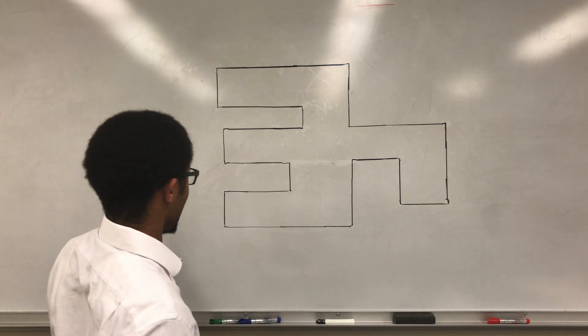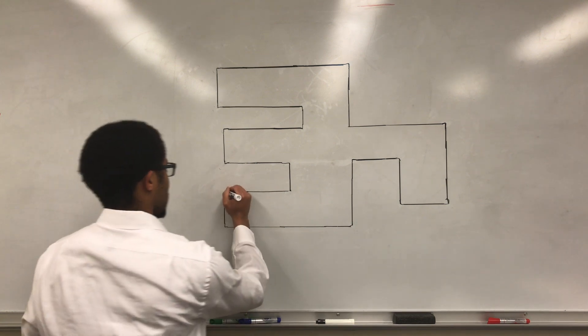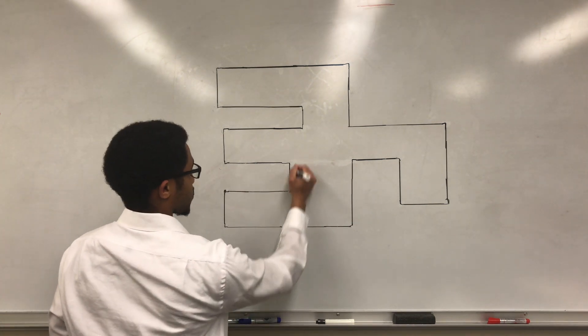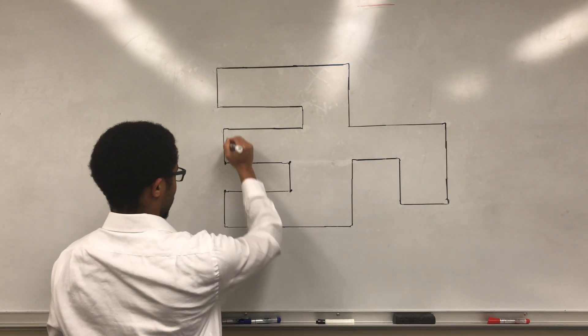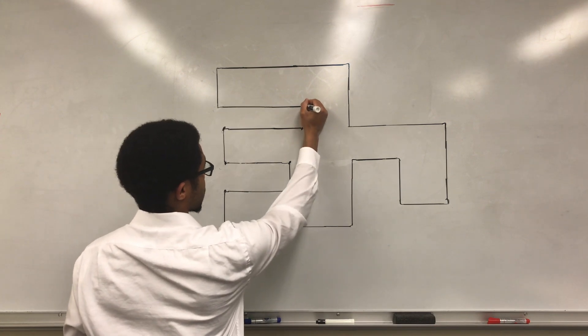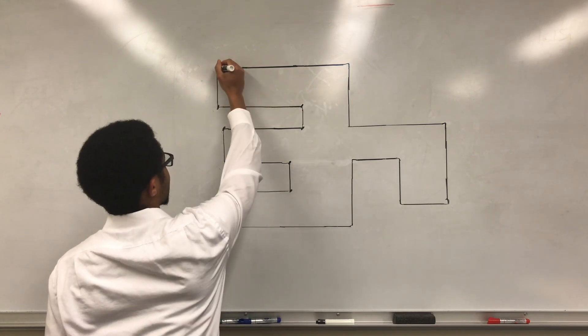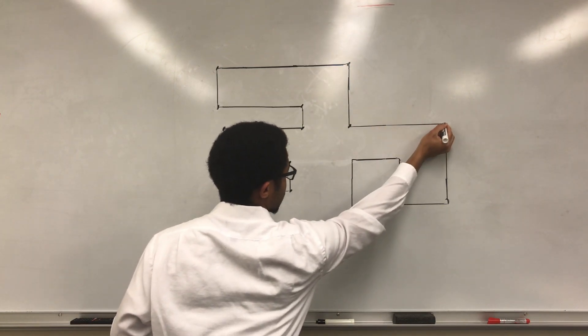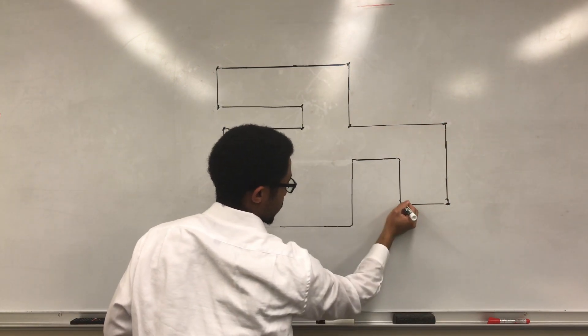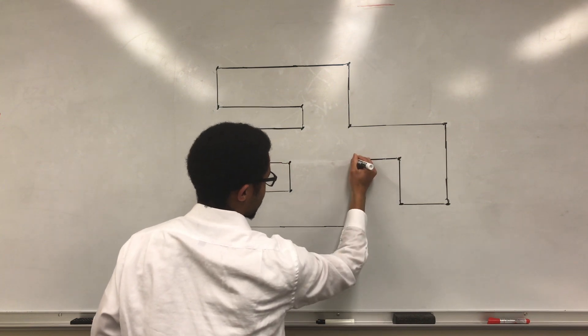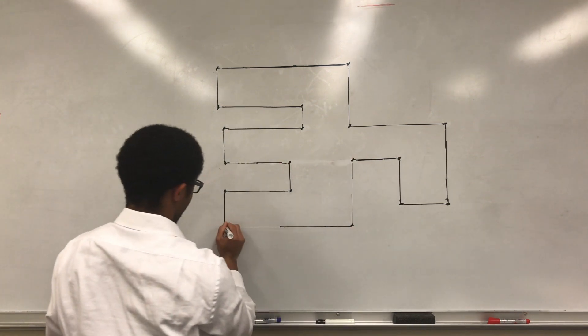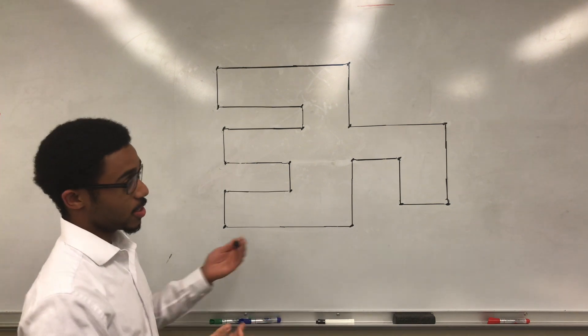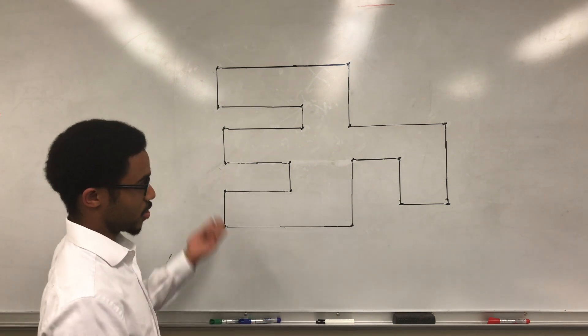We could just put one guard at every vertex in the polygon, because then literally every point in the shape would be guarded by one guard. But what we're trying to do is find the least number of guards needed to guard the museum.